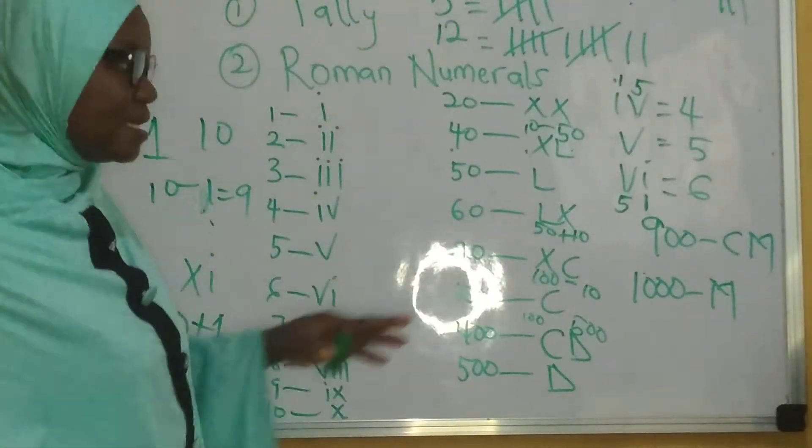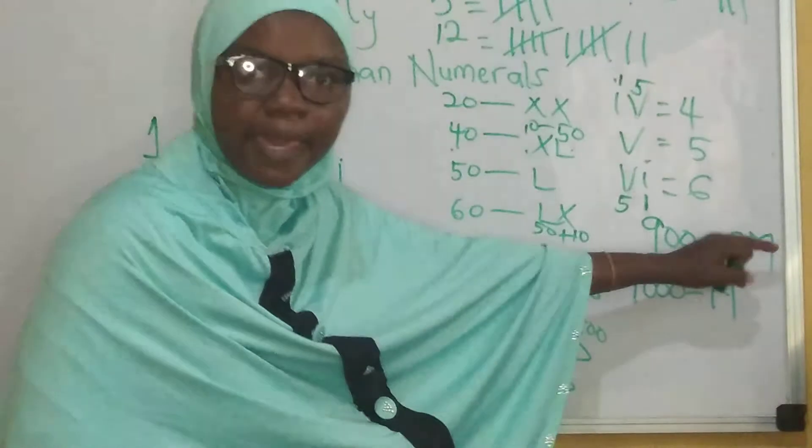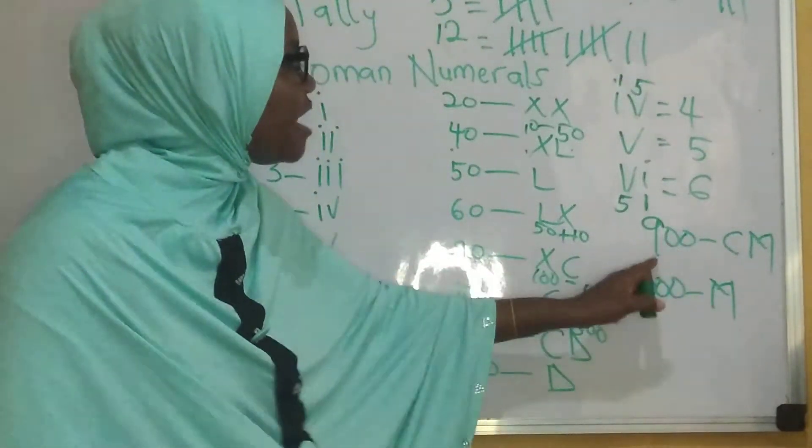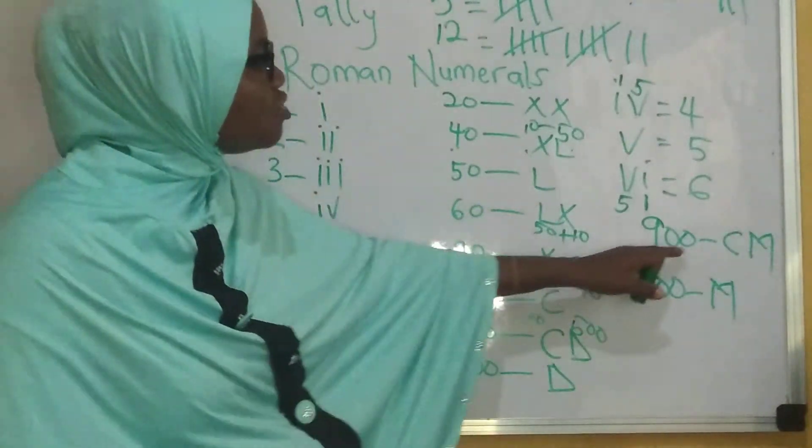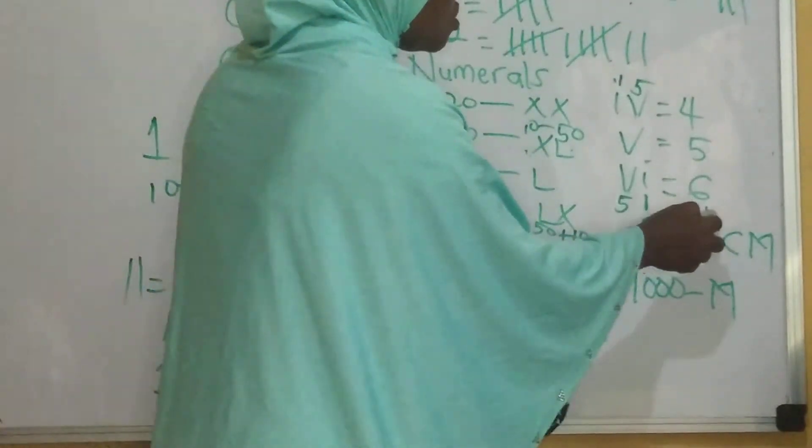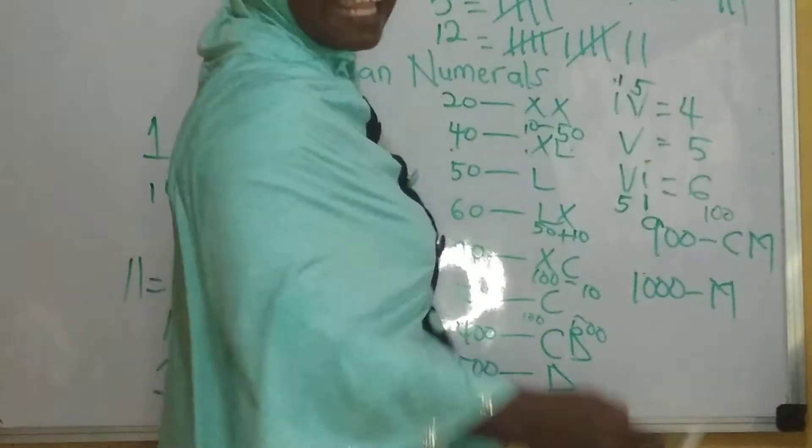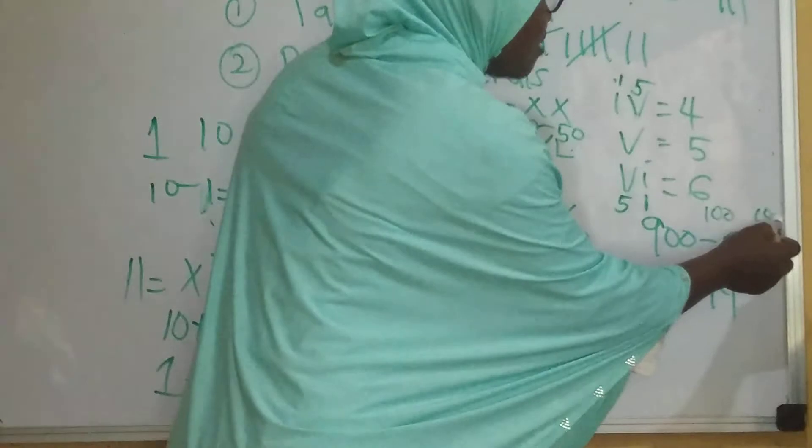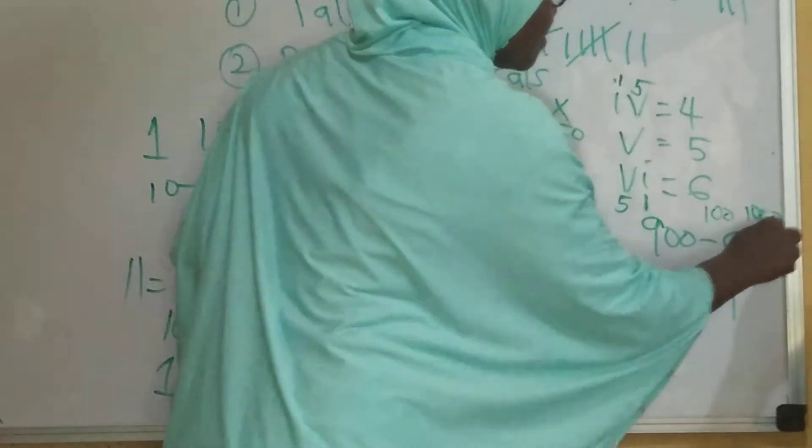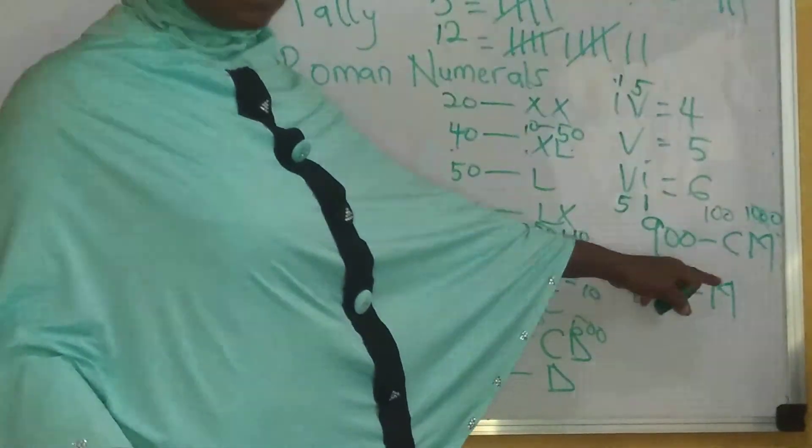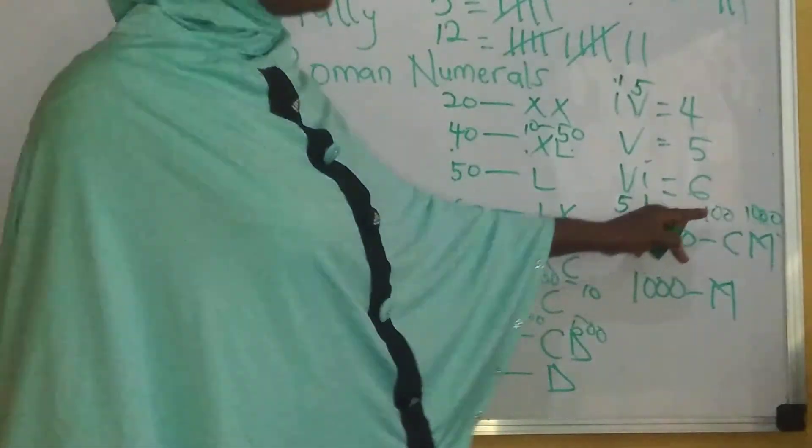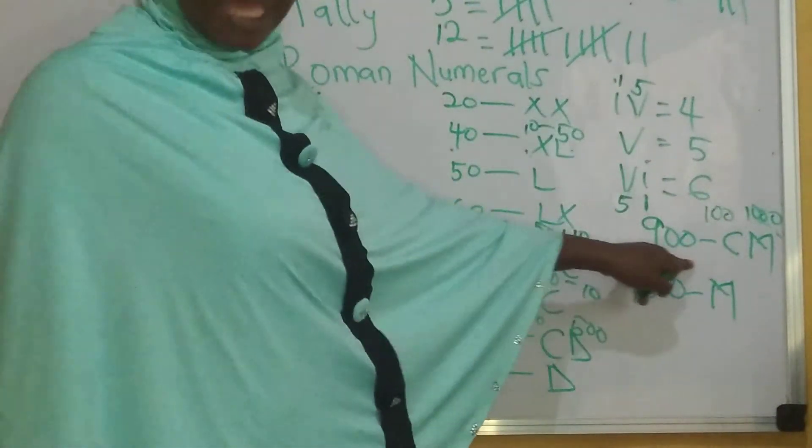So lastly, my 900 is CM. And my 1000 is M. Why is my 900 CM? My 900 is CM because of the fact that I know that this C is a smaller number, which is 100. And this M is a larger number, which is 1000. Anytime you have a smaller number first before a bigger number, you have to subtract. So if I say 1000 minus 100, it should give me 900.